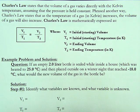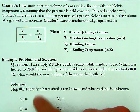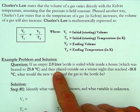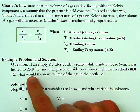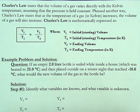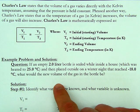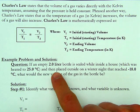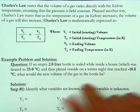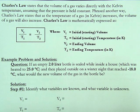Each Charles' Law problem you will be given three of the four variables and you have to solve for the unknown. The first example problem says: if an empty two-liter bottle is sealed while inside a house which has been heated to 25 degrees Celsius and then placed outside on a winter night that reached minus 18 degrees Celsius, what would the new volume of the gas in the bottle be? You have a starting volume given and two temperatures given, so the temperature is what's changing and as a result the volume will change as well.